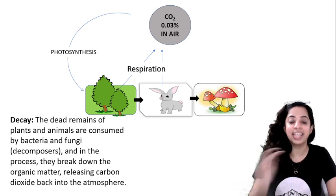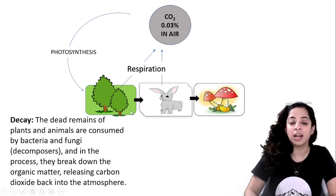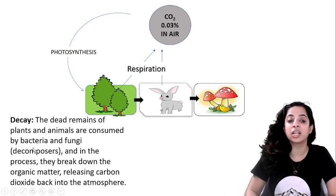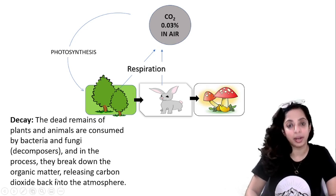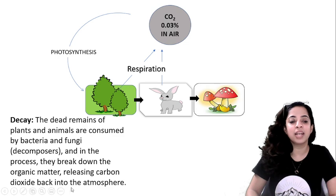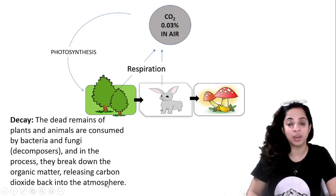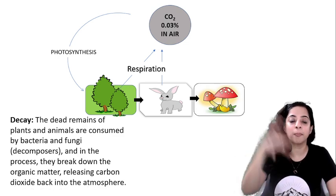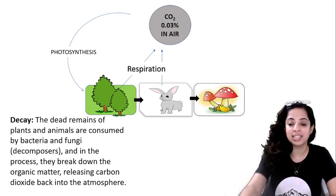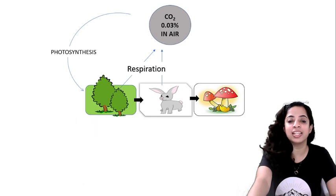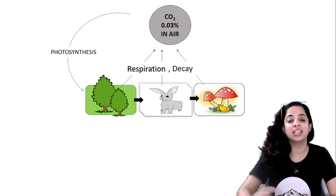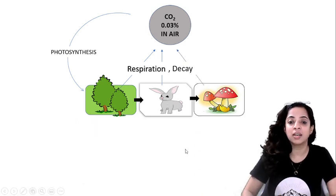Next come the decomposers. When plants and animals die, their dead remains are consumed by bacteria and fungi — the decomposers. In this process, they break down the organic matter, releasing carbon dioxide back into the atmosphere. So decay is another pathway by which CO2 is returned to the atmosphere.